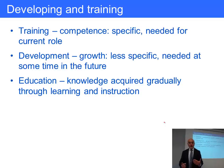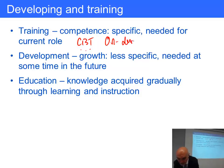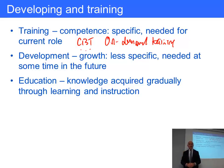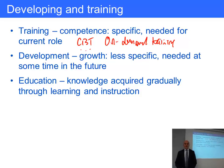The tricky thing about a lot of training is timing — you might have to wait six months for a course, or complete one and then not use the material for another six months, by which time you've forgotten it. This is where some organisations make great use of CBT — computer-based training, sometimes called on-demand training — where you can bring up a video or interactive module and get the training just in time, just as you need it.